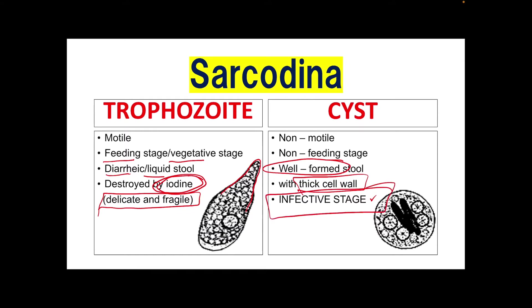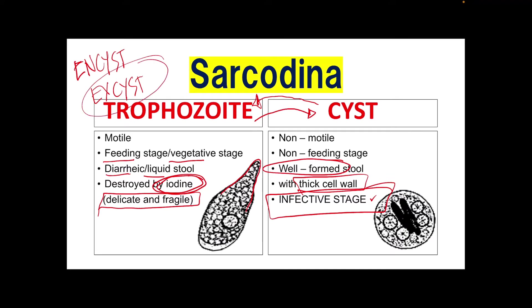We have the terms encystation and excystation. Encystation means the trophozoite turns into a cyst. Excystation means the cyst turns into trophozoites, which occurs inside our gastrointestinal tract. If the amoeba is excreted as trophozoites, it can no longer mature into a cyst once outside the body. Encystation occurs in the lower intestine, where the organisms begin to multiply as trophozoites.